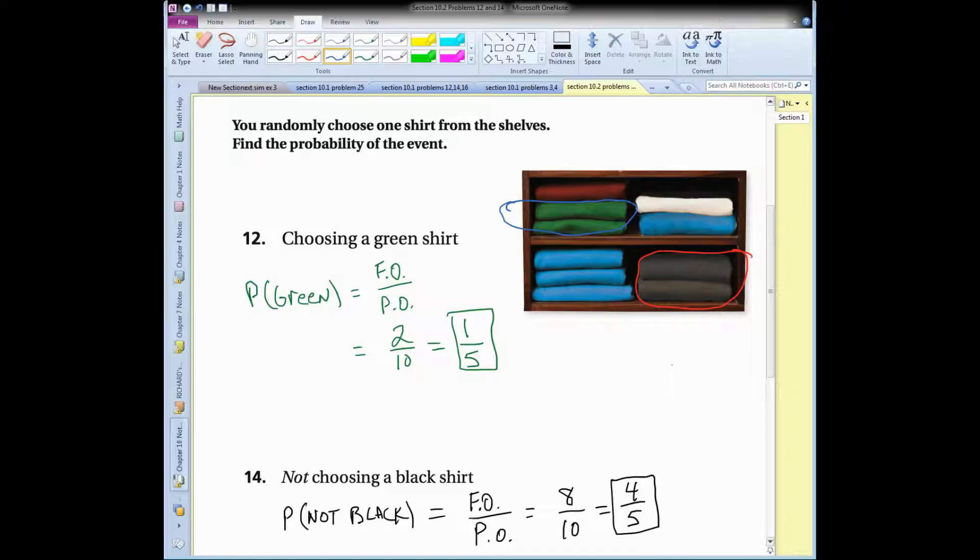Number 12 says the probability of choosing a green shirt. So I put a circle around the green shirts, right? And remember the formula to find the probability of an event? It's the foe over the poe. The foe are the favorable outcomes, the outcomes you want. So in this problem, we want to choose a green shirt. How many different green shirts are there? Well, there are two of them. And then the poe is the number of possible outcomes. So how many t-shirts do I have to choose from?